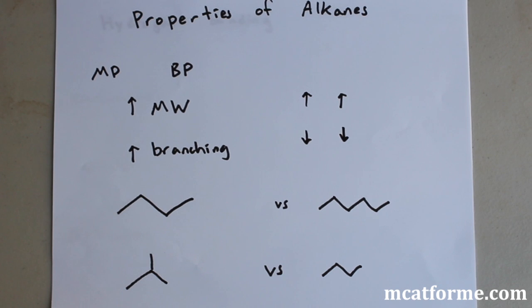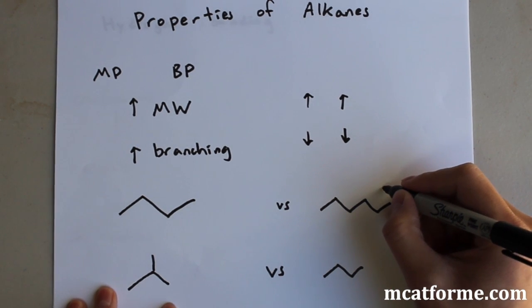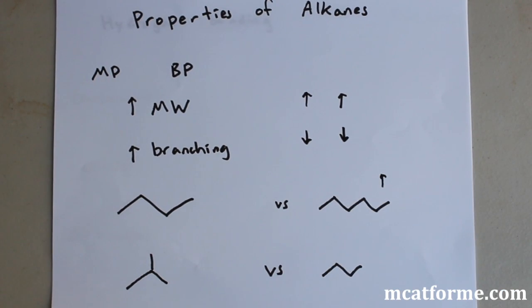We have two examples here. If we're asking what's going to have the higher melting point and higher boiling point, in the first example, this is based on molecular weight because there's no branching. So this one's going to have the higher melting point and higher boiling point due to its higher molecular weight.